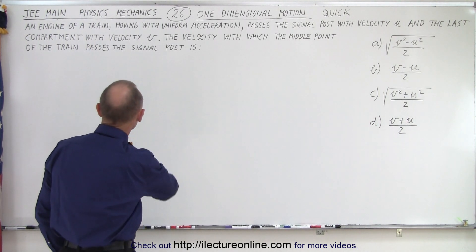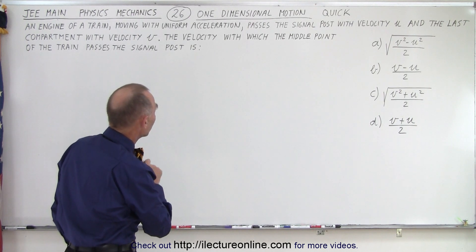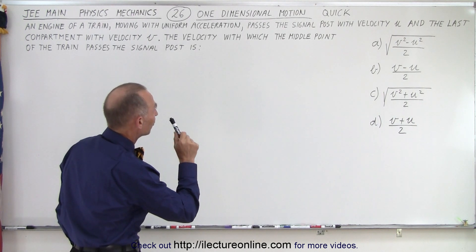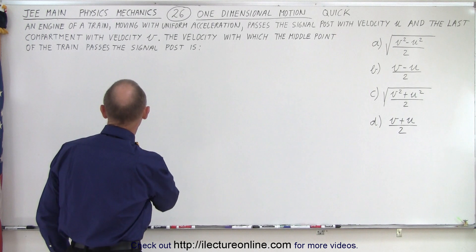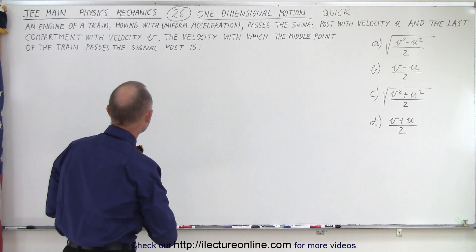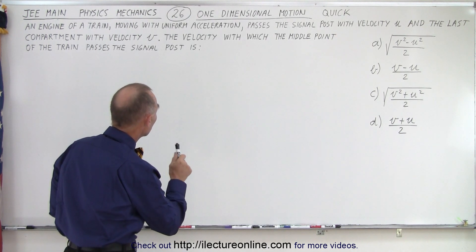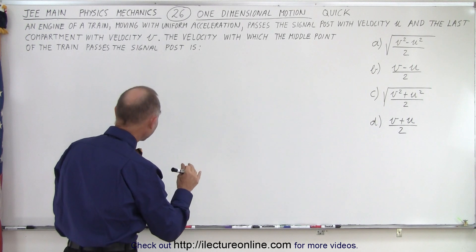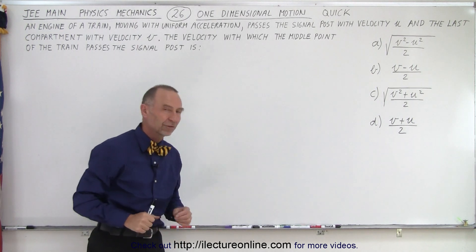An engine of a train moving with uniform acceleration passes a single post with velocity U and the last compartment with velocity V. The velocity with which the middle point of the train passes a single post is — and we get four possible answers.